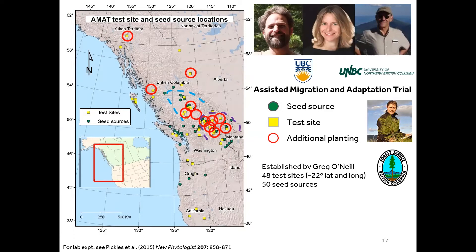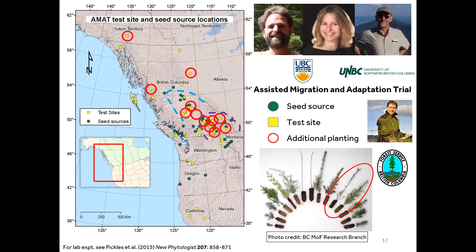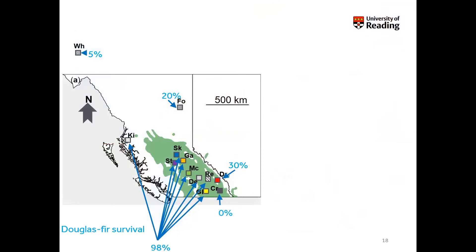We got involved in a large experiment in British Columbia set up by Greg O'Neill using 48 test sites across 22 degrees of latitude and longitude with 50 seed sources. The red circles show places where we did additional tree planting at different sites in different climatic zones. The purple dashed area shows the distribution of western larch and the light blue the distribution of another species we used — planting these out in different environments and examining how different seedlings respond to changes in climate, soils, and mycorrhizas.